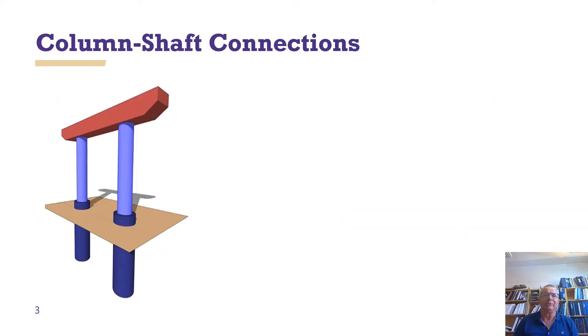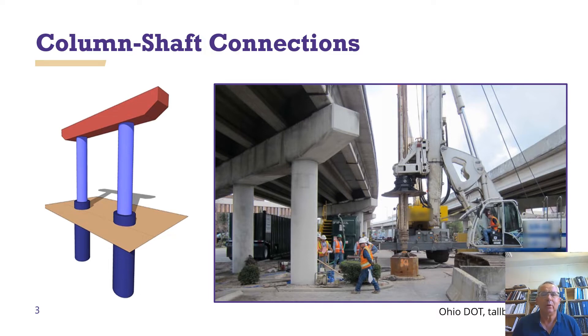So first of all, let's talk about what is a column-to-shaft connection. On the left-hand side, you can see a red beam that's supported by light blue columns, and those are founded on drilled shafts, which are the dark blue at the bottom, in which case a drill has gone down and has made a hole and has been then filled in with concrete. And what we're worried about is a connection between those light blue columns and the dark blue shafts beneath them. This connection is often used in places where there's not a lot of room for a spread foundation or a pile foundation. In the picture on the right, you can see they're extending the width of the bridge, and they don't have a lot of room to work with. There you can see the drilling machine that is drilling the drilled shaft.